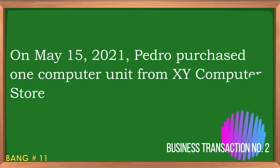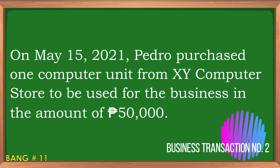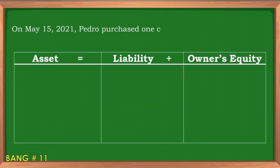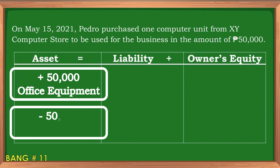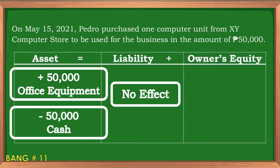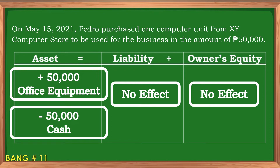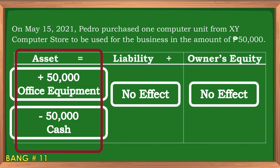Business transaction number two: On May 15, 2021, Pedro purchased one computer unit from XY Computer Store to be used for the business in the amount of 50,000 pesos. For asset, there is an increase of 50,000 pesos for office equipment and a decrease of 50,000 pesos for cash. No effect for liability and no effect for owner's equity. This business transaction only affects the asset side of the equation.